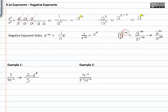Remember, if you have a negative exponent and you want to get rid of the negative exponent, you shift it across the fraction bar.